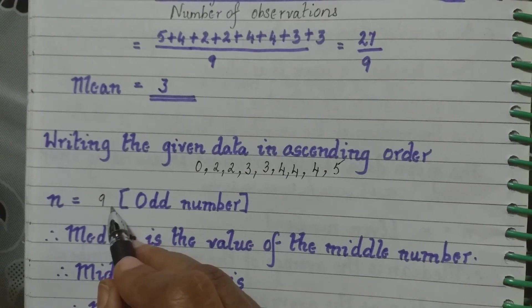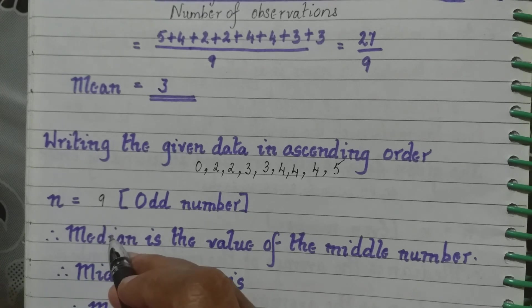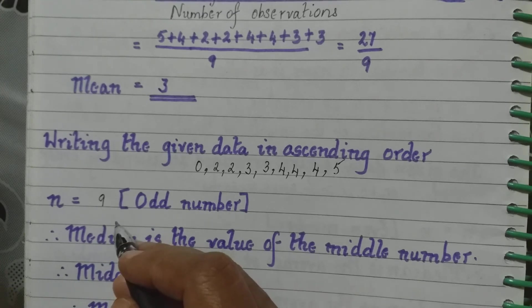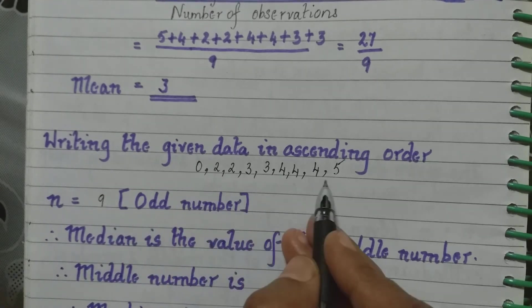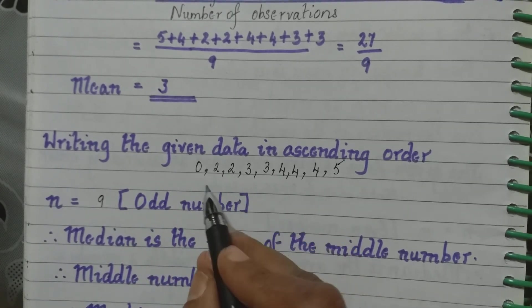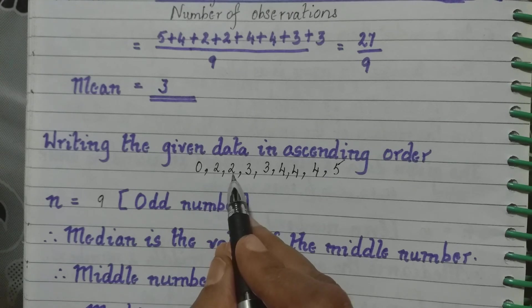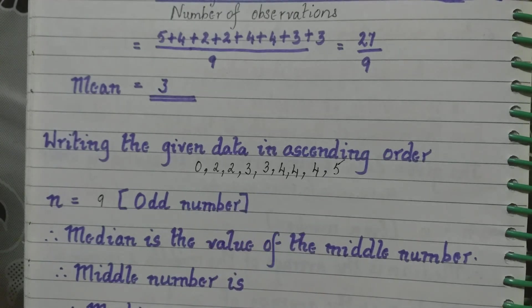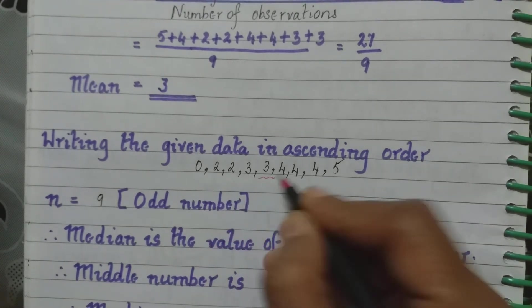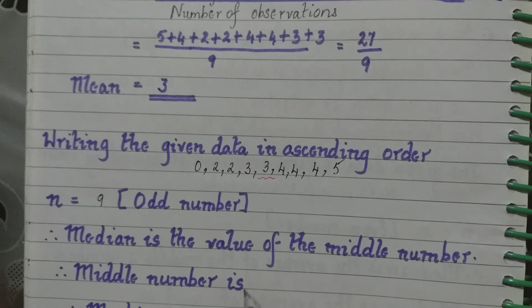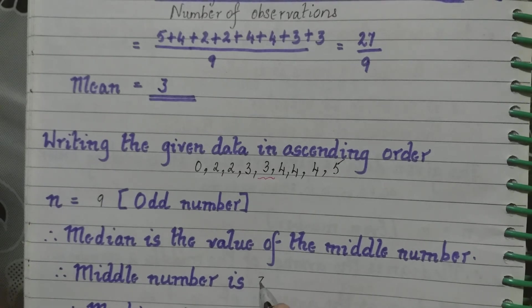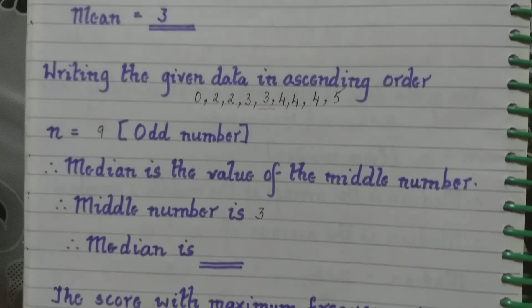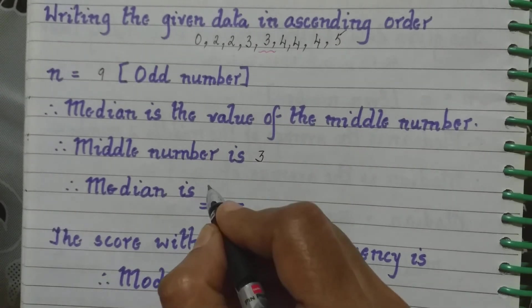So when we divide by 2, 10 divided by 2 is 5. So the 5th observation which is in the ascending order. 1, 2, 3, 4 and 5. So this is the 5th observation. Therefore, middle number is 3. Therefore, the median is also 3.